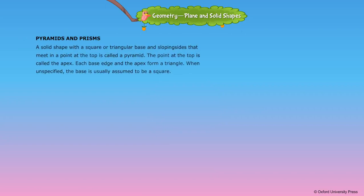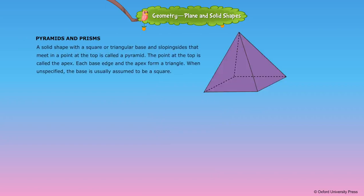Pyramids and prisms: A solid shape with a square or triangular base and sloping sides that meet in a point at the top is called a pyramid. The point at the top is called the apex. Each base edge and the apex form a triangle. When unspecified, the base is usually assumed to be a square.